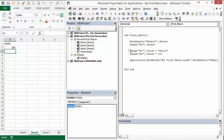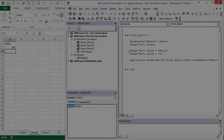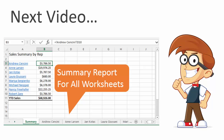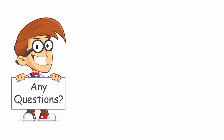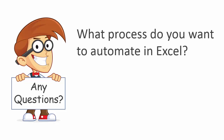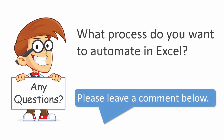That was an overview of writing our first macro and programming the objects in Excel. In the next video, we're going to write a macro that will create a summary report for all the worksheets in the workbook. Andy is excited, and I hope you are too! Please leave a comment below with any questions and let me know what processes you want to automate in Excel. Thanks for watching, and I'll see you soon.